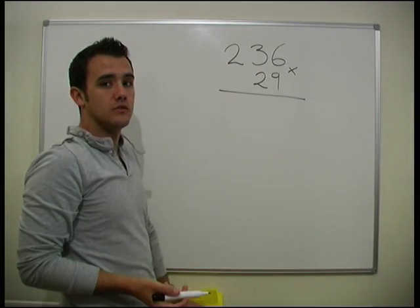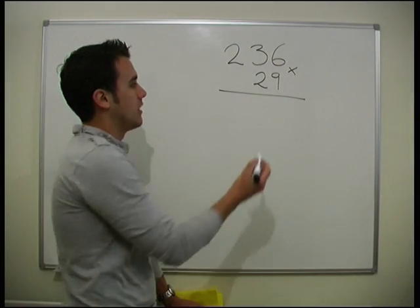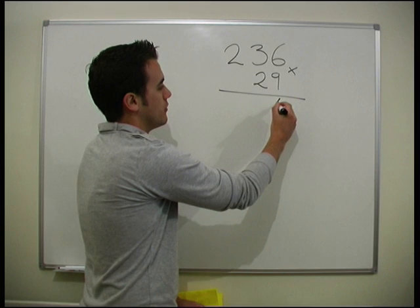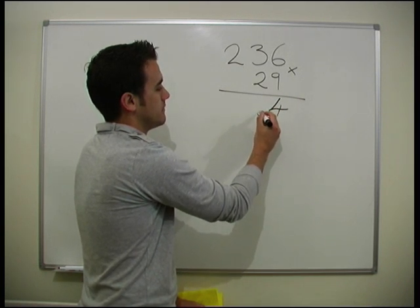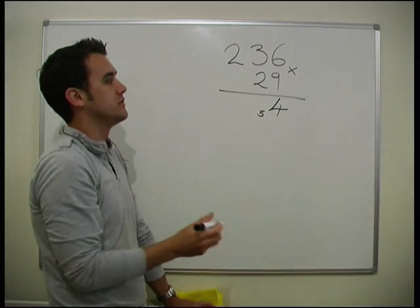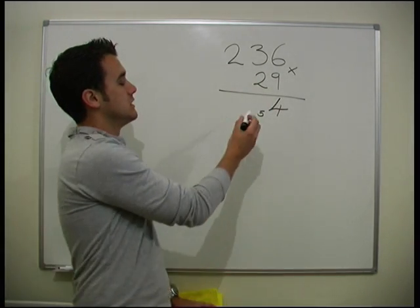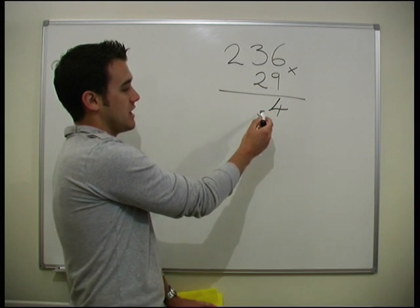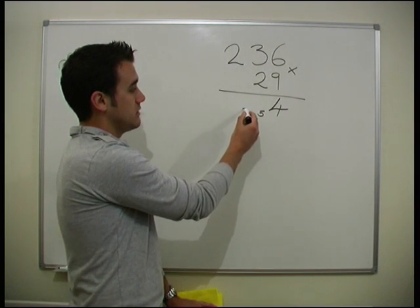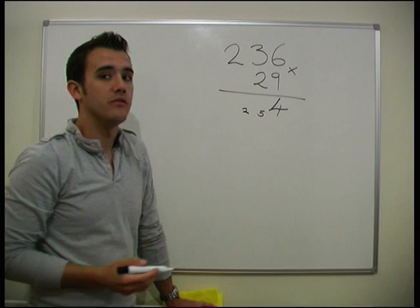So 9 times 6 is 54. So we put the 4 in. We've got the 5 left over. Okay, 5 carries up. 9 times 3. 9 times 3 is 27. So we've got the 7 here. Plus the 5. So we've got 27 plus 5.